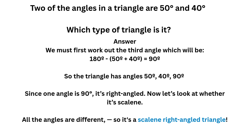Second question: two of the angles in a triangle are 50 degrees and 40 degrees. The three angles add up to 180, so we do 50 plus 40, which equals 90. Then 180 minus 90 gives us 90 — the size of the final angle. So our triangle has angles of 50 degrees, 40 degrees, and 90 degrees. Since one of the angles is 90 degrees, we know it's a right angled triangle. However, each angle is a different size — 50, 40, and 90 — so it is a scalene right angled triangle.